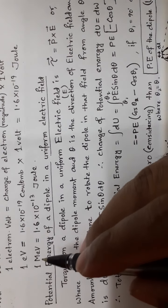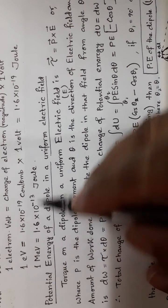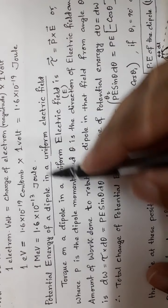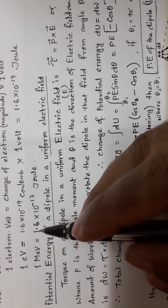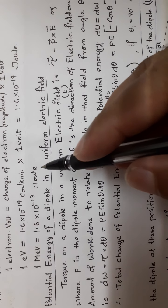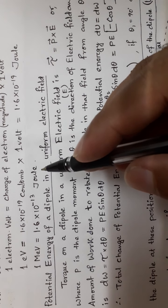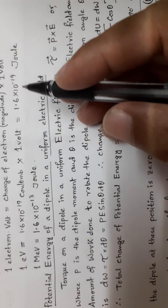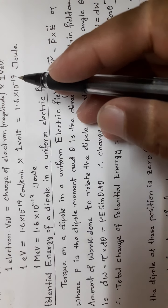1 electron volt is equal to 1.6 into 10 to the power minus 19 joules. This will be 10 to the power minus 19 joules, and 1 electron volt is the same as 10 to the power minus 13.